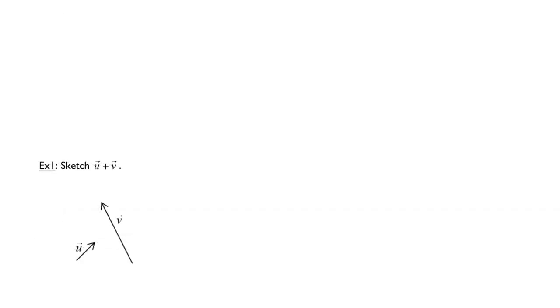Let's take a look at this example. We're asked to sketch U vector plus the V vector, and we're given these two vectors. So I'm going to draw an approximate U vector and an approximate V vector.